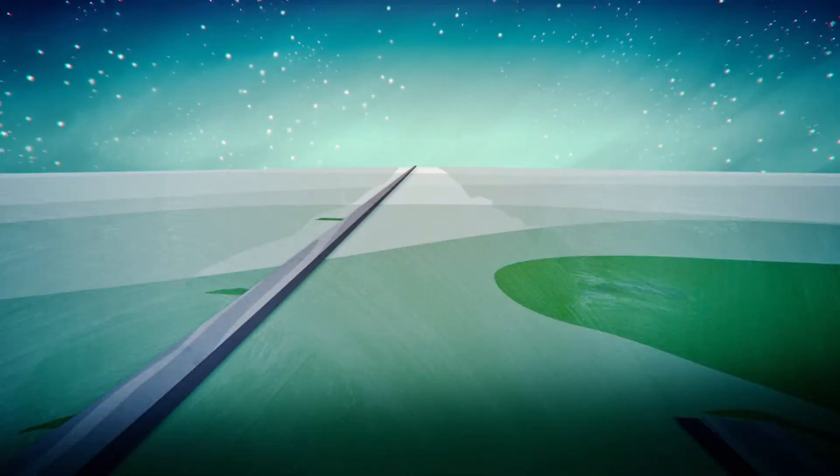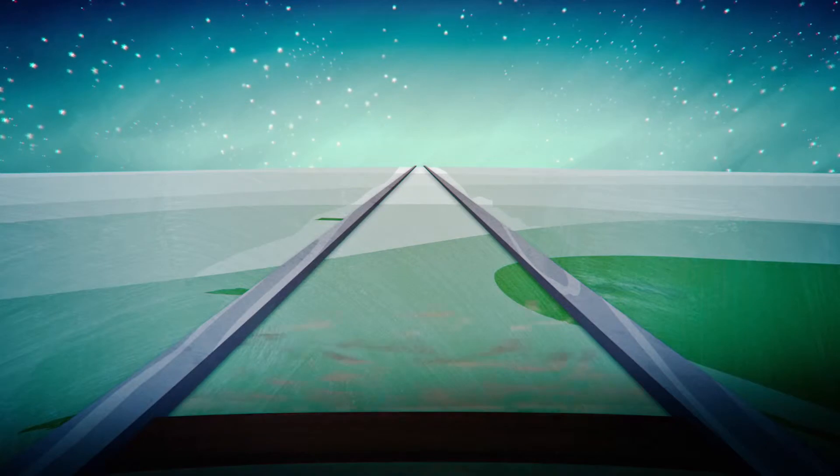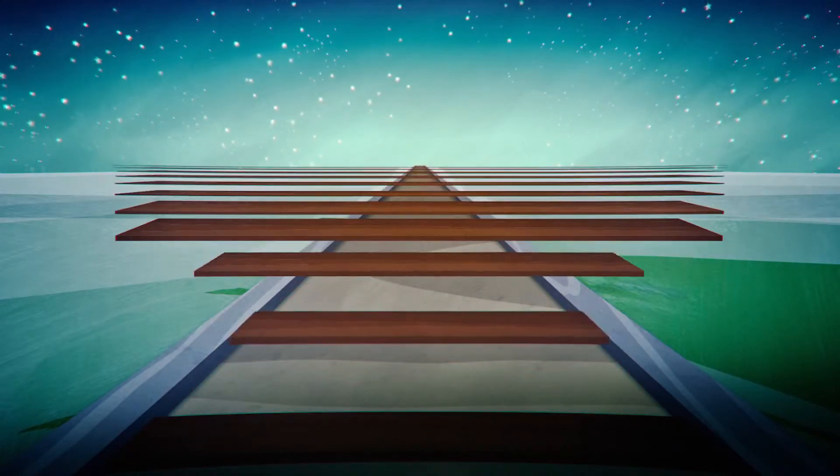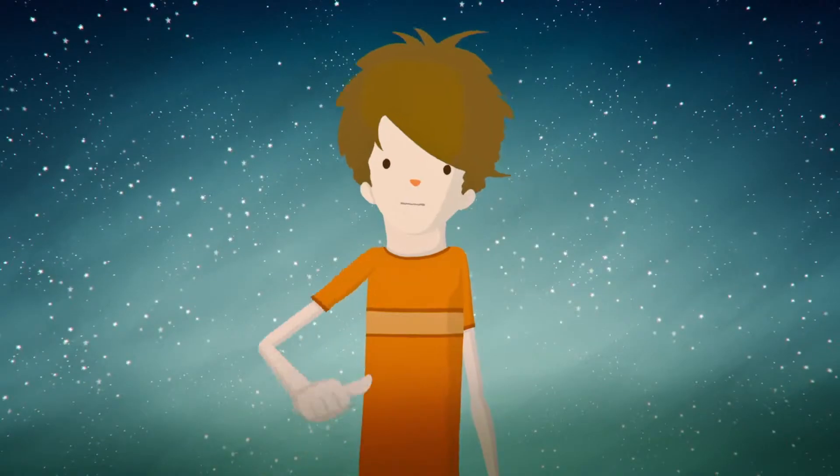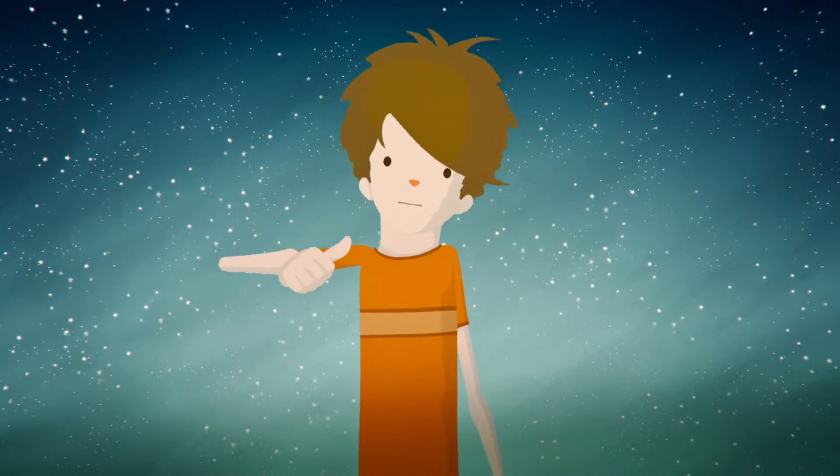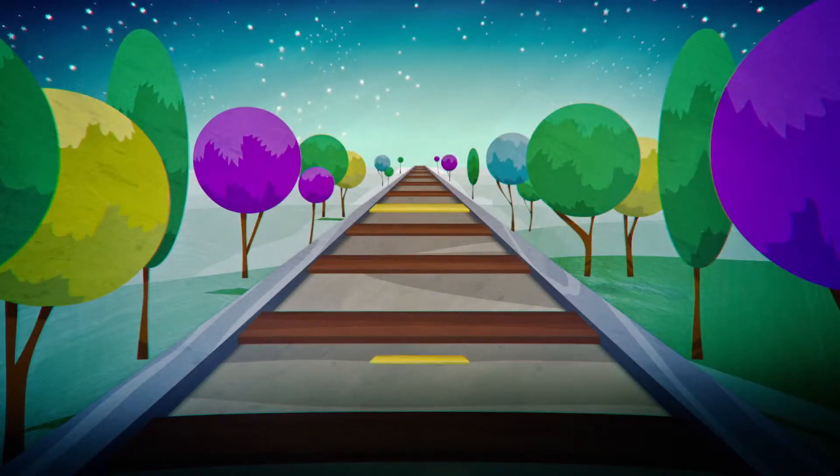Another possibility is the famous Ponzo illusion. If you've ever tried to draw in perspective, you know that the closer something is to the horizon, the smaller you should draw it. Our brain compensates automatically for this by perceiving objects near the horizon as larger than they actually appear.